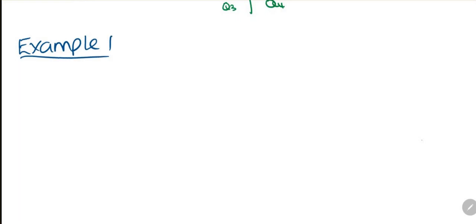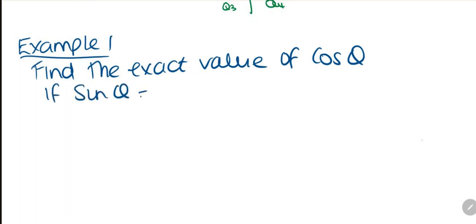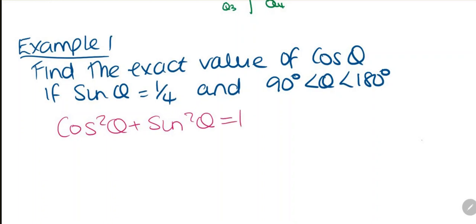So example 1: find the exact value of the cosine of theta if sine of theta is equal to one quarter, and theta is between 90 and 180 degrees. We're going to use the Pythagorean identity: cosine squared theta plus sine squared theta is equal to 1.